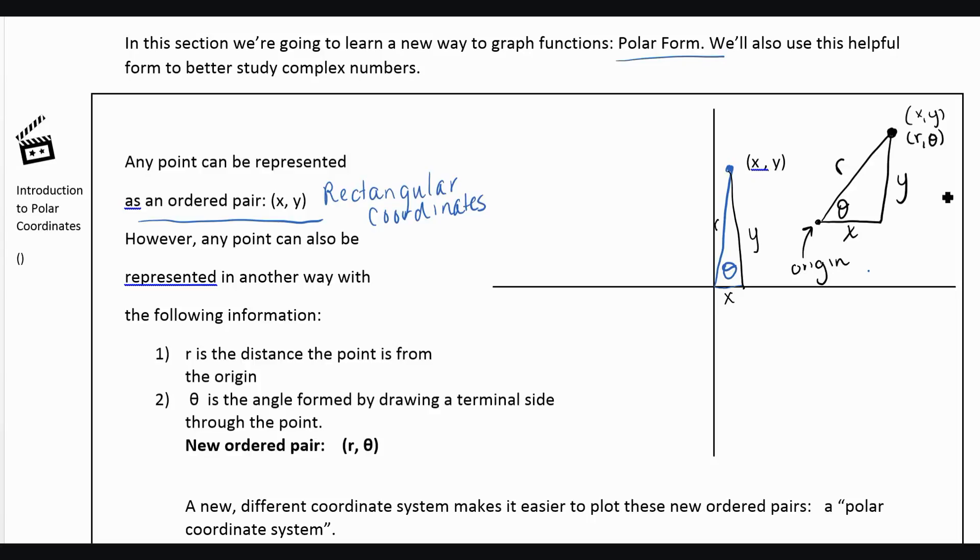We can write some equations that will help us go between the two. Okay, so our new pair is R and theta. Our old pair is X and Y. And we're going to want to be able to talk about that same point, either in rectangular or polar. So the first thing we can notice is this is a right triangle.